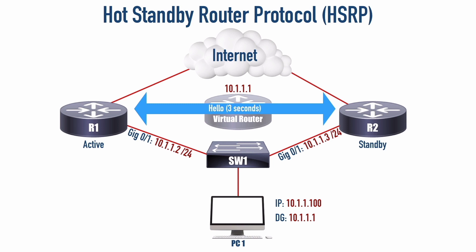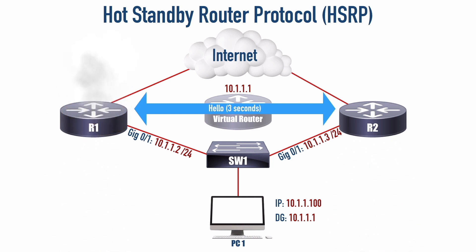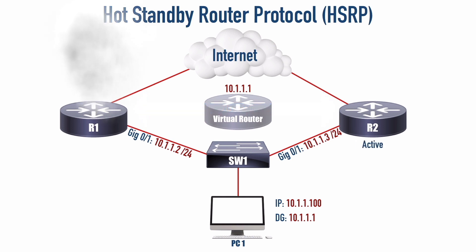The default hold time is a little bit more than three times the hello time — it's 10 seconds. But 10 seconds might be a little bit slow to converge by our standards; we could speed things up by adjusting the timers. Under normal operation, we're going to be going out through R1 to get out to the internet. But if R1 goes down, R2, after the hold time has expired, is going to take over as the active router, and packets going out to the internet will go through R2.